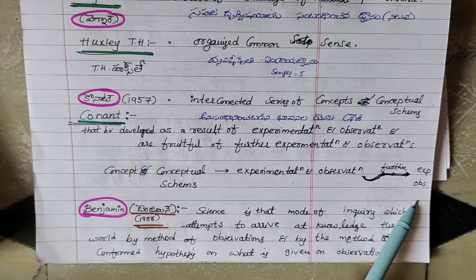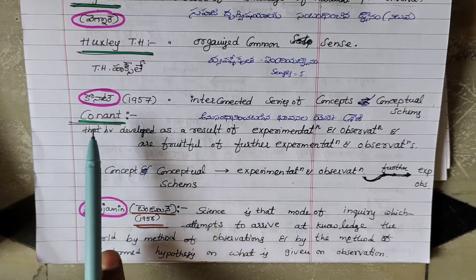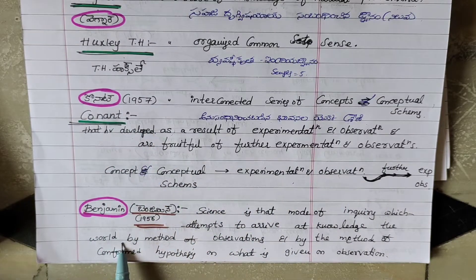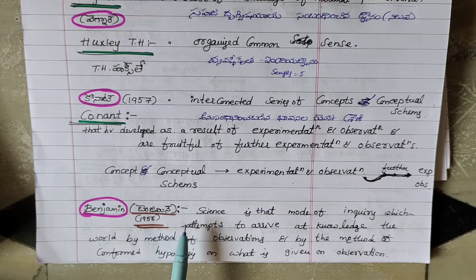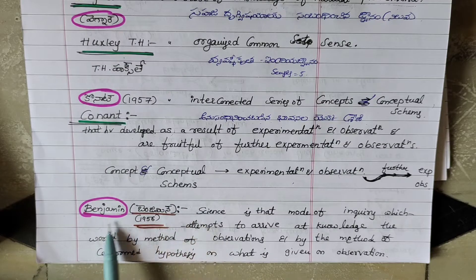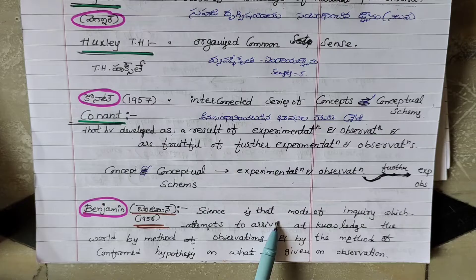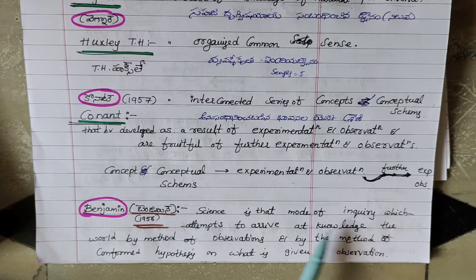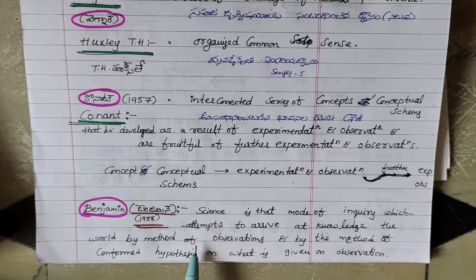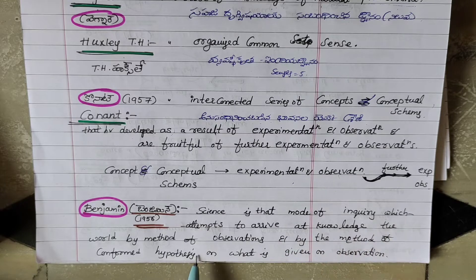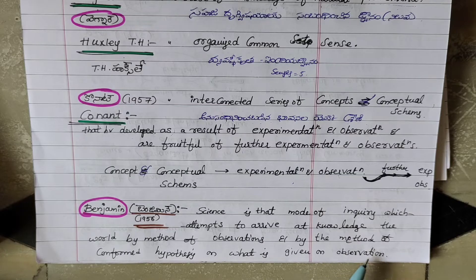In the year 1956, Benjamin gave a definition for science: science is that mode of inquiry which attempts to arrive at knowledge of the world by method of observations and by the method of confirmed hypothesis on what is given on observation.